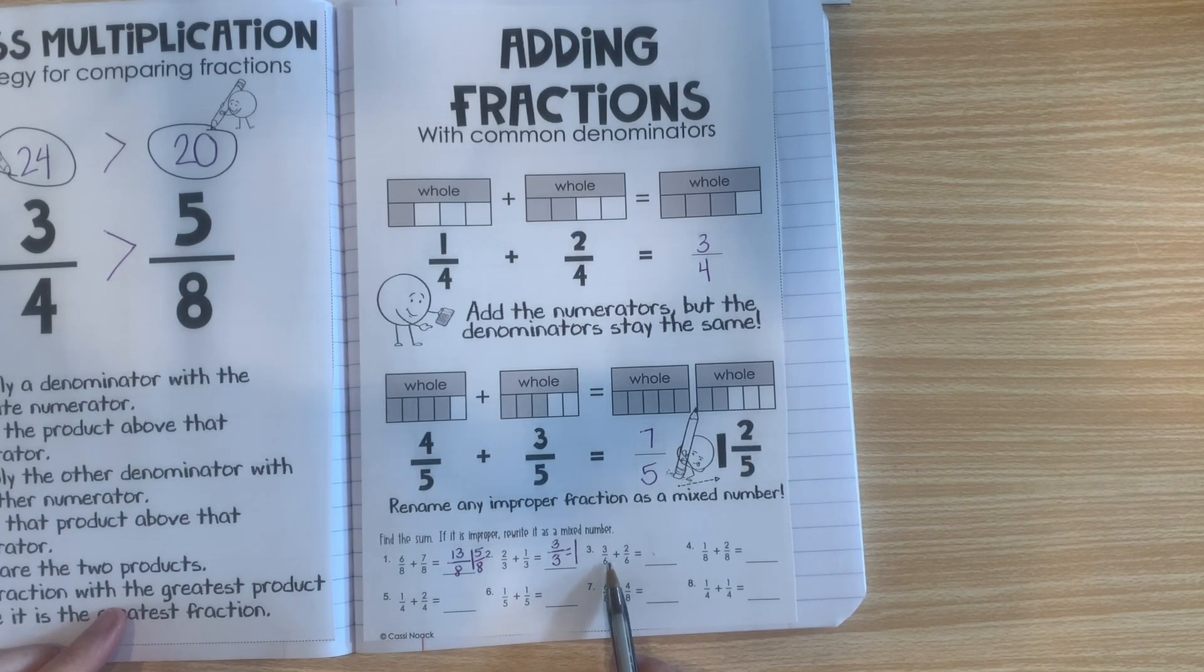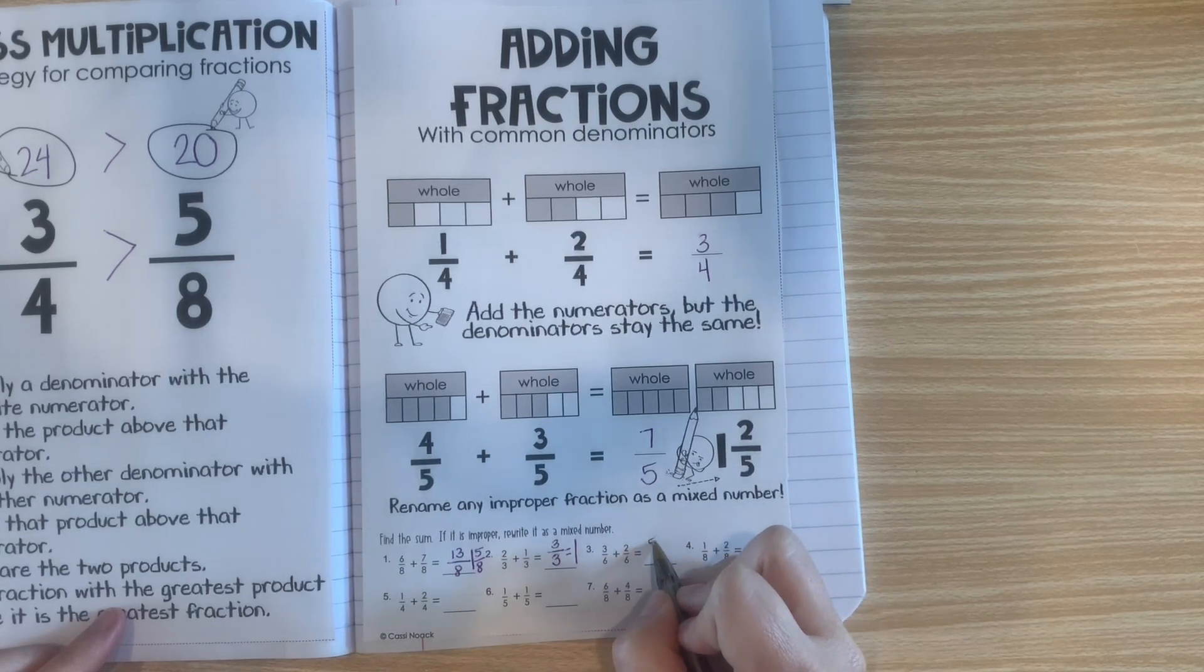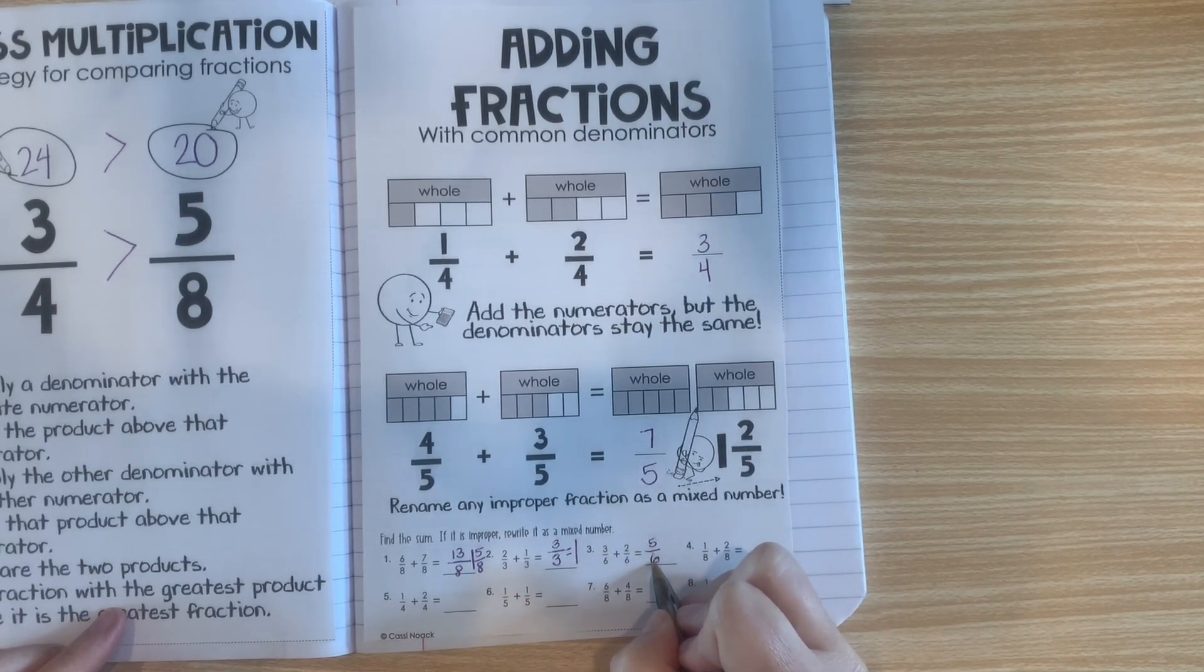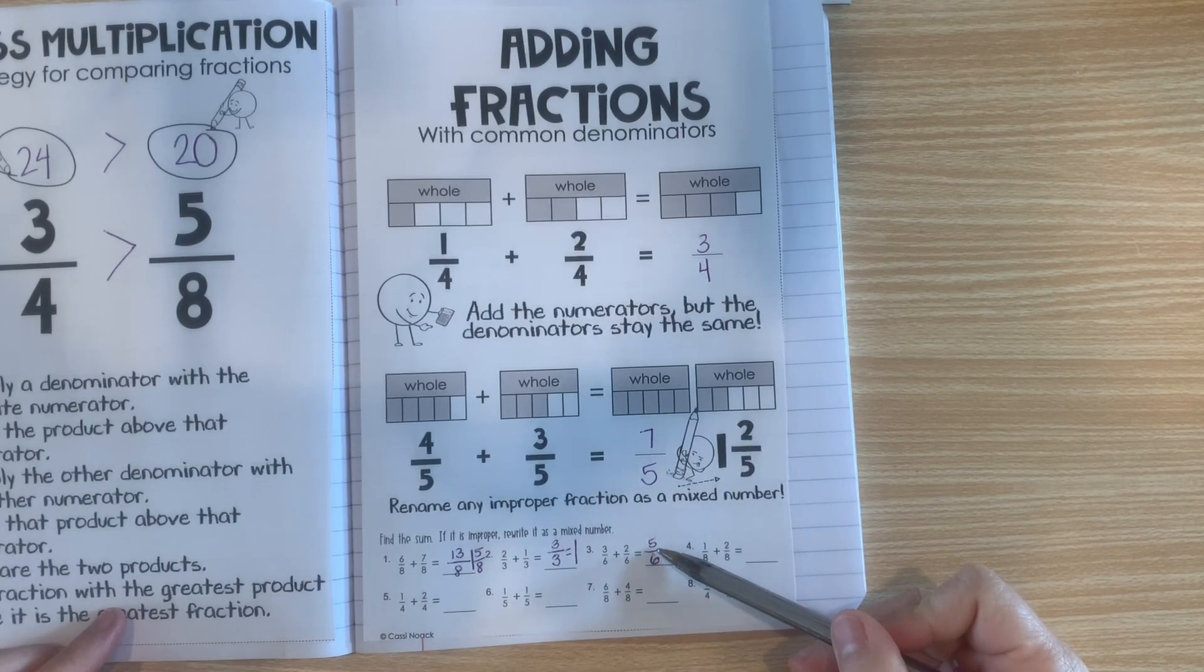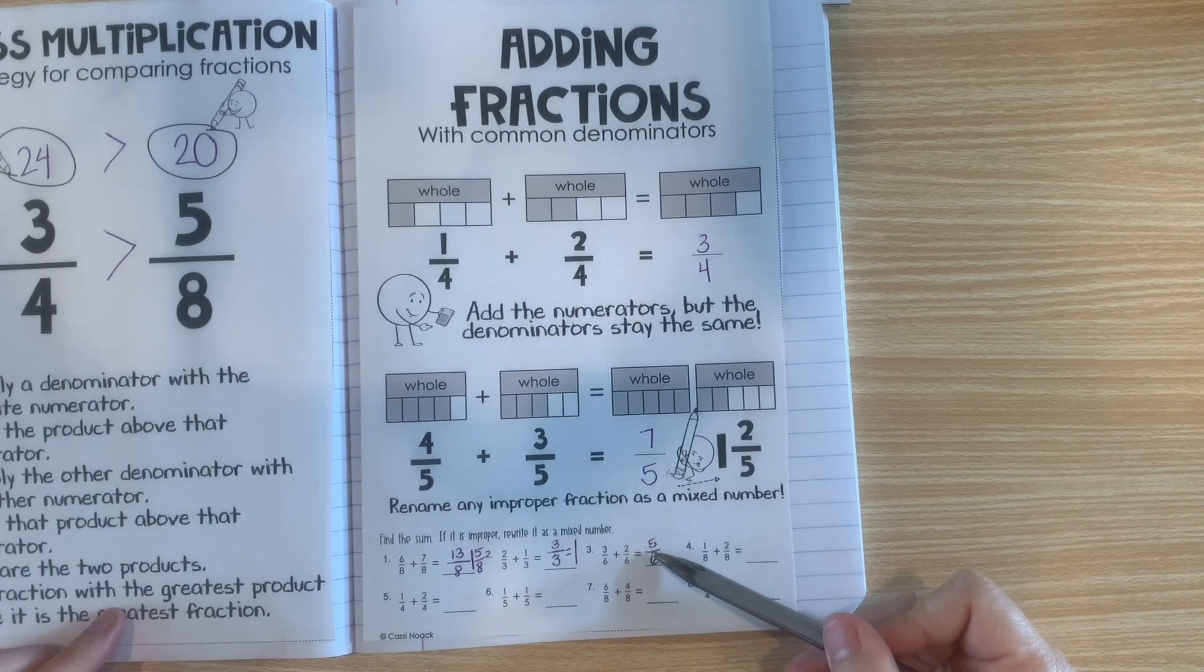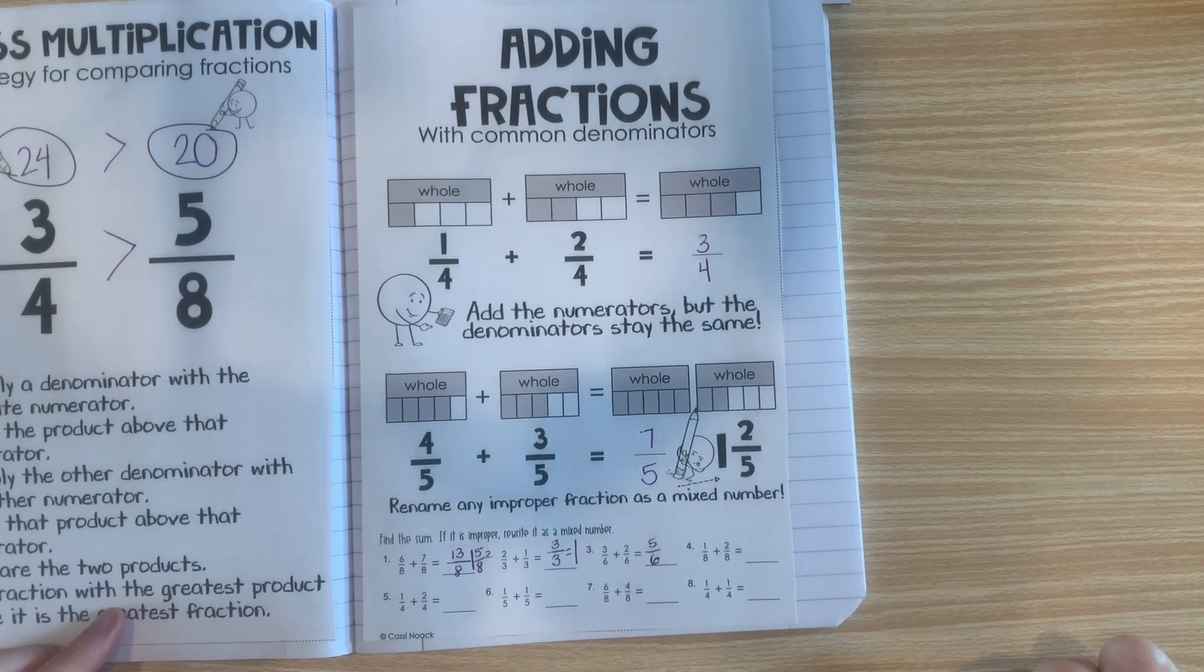Now, let's do number 3. Here we have 3 plus 2 makes 5. And our denominator stays the same. This one is not an improper fraction. It's 5 sixths. The numerator is already smaller, so we can just leave it like that.